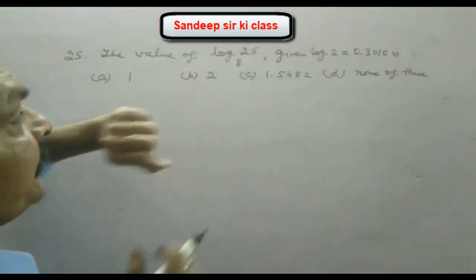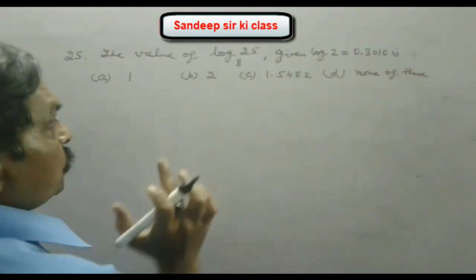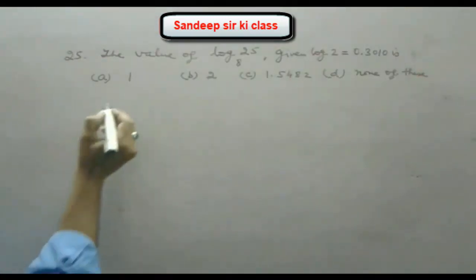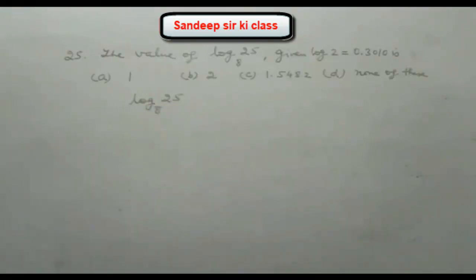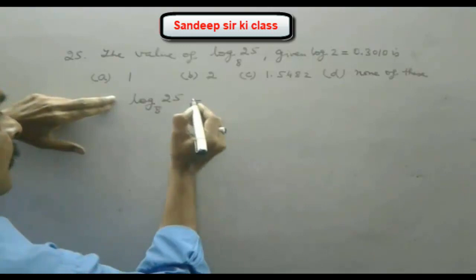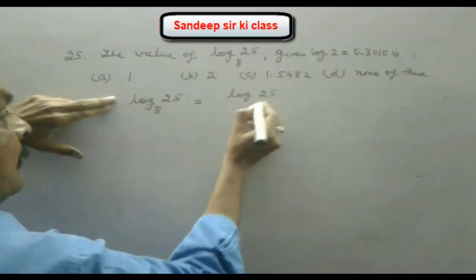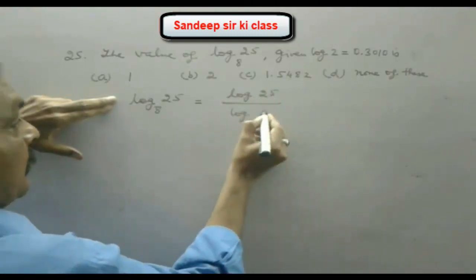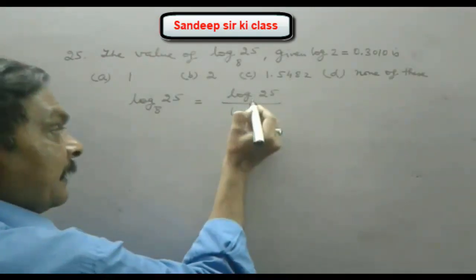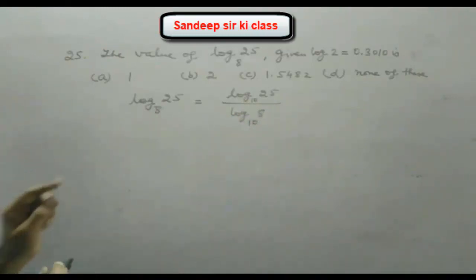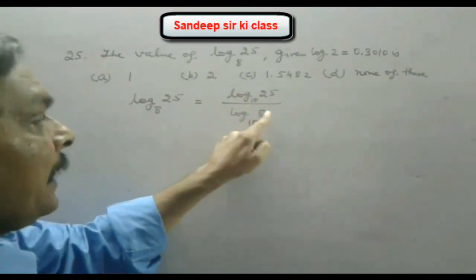Question number 25: find the value of log 25 to the base 8, given that log 2 = 0.3010. Using the base change formula, log 25 to the base 8 can be written as log 25 upon log 8, taking base 10 — that is, log 25 to the base 10 upon log 8 to the base 10.